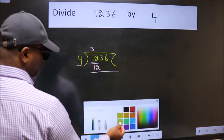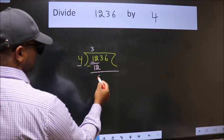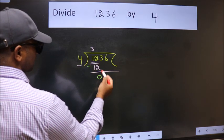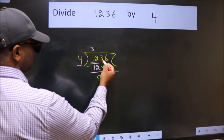Now, we should subtract. We get 0. After this, bring down the beside number. So, 3 down.